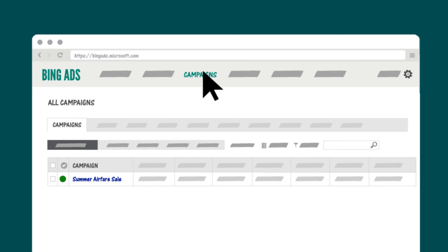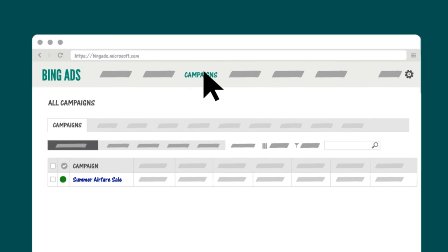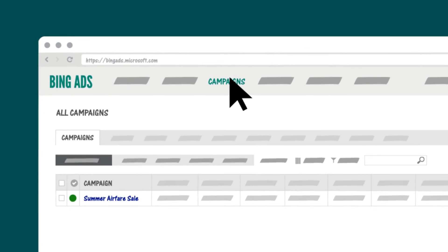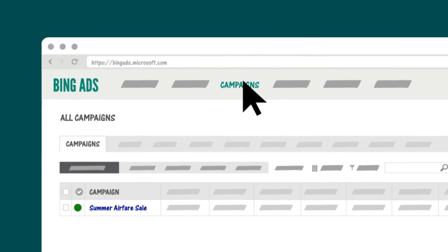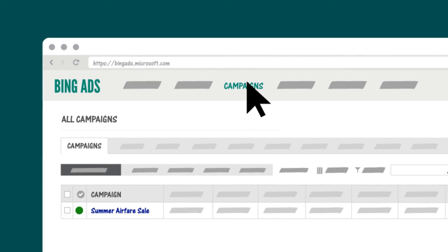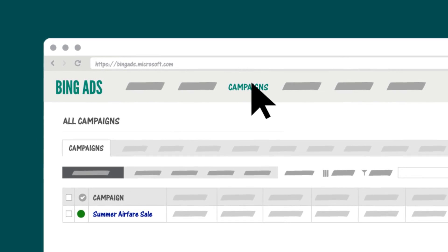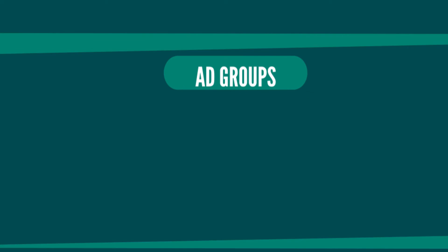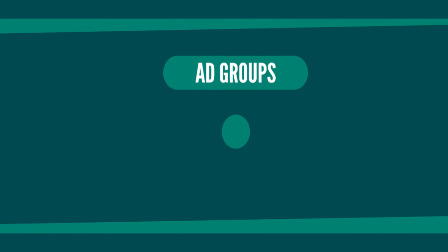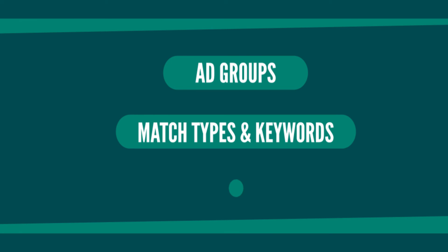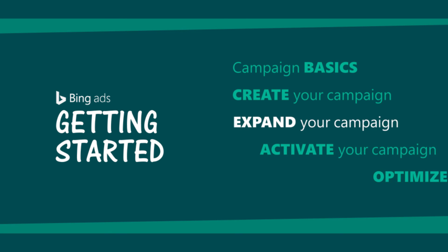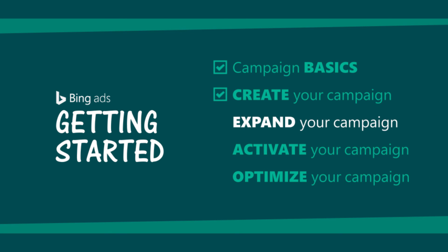Congratulations, you've created your first ad campaign. You could stop here, but to maximize your ROI and keep your campaigns competitive, I'd encourage you to take some important next steps. For example, create more ad groups, work with different match types and keywords, use reports to monitor your campaign, and so on. All of these topics are covered in other videos in this series. Take a few minutes to watch them and create a campaign that you'll be proud of.